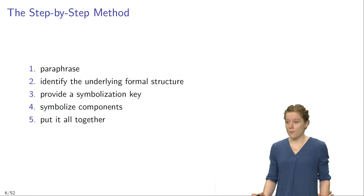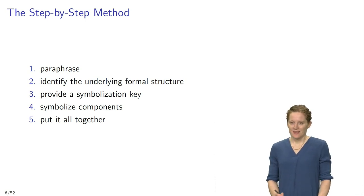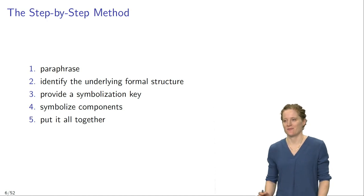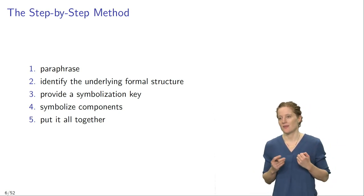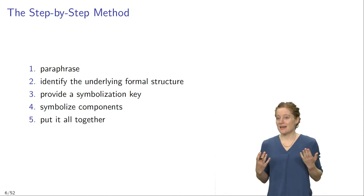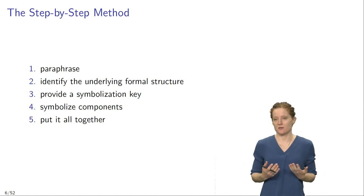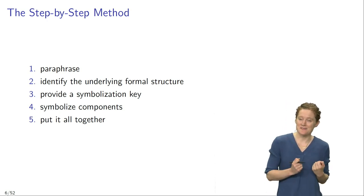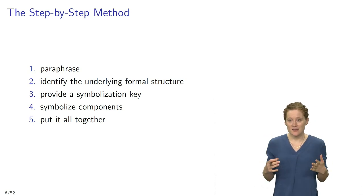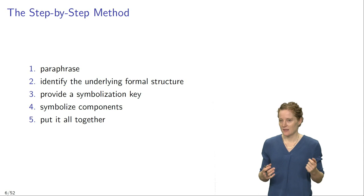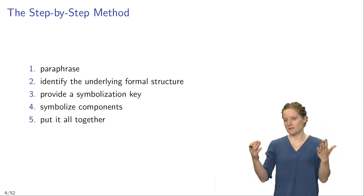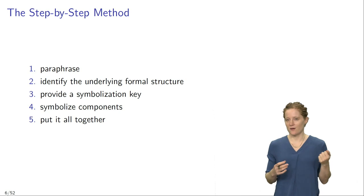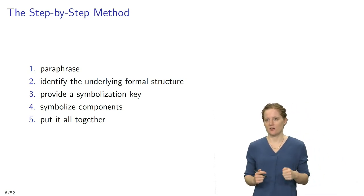Often we want to symbolize more complicated sentences, and in those cases it is helpful to have a strategy. I want to suggest a five-step strategy. Whenever you want to symbolize a more complicated English sentence, start with a paraphrase that makes the underlying formal structure transparent. Then identify that formal structure, provide a symbolization key for all relevant predicates, symbolize the components of your sentence, and then put it all together by combining the formal structure with the symbolized components.